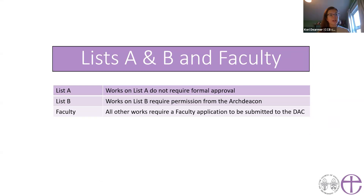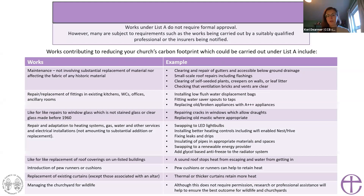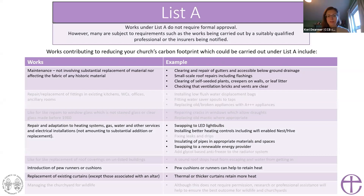On List A, you don't have to apply for formal approval in any way. On List B, you have to ask your archdeacon for permission. Anything which doesn't appear on List A or List B requires a full faculty application from your DAC — Diocesan Advisory Committee. There are still requirements with List A, such as having a suitably qualified professional carry out the works or notifying your insurers. I've included a link to List A and B at the end so you can check the requirements.